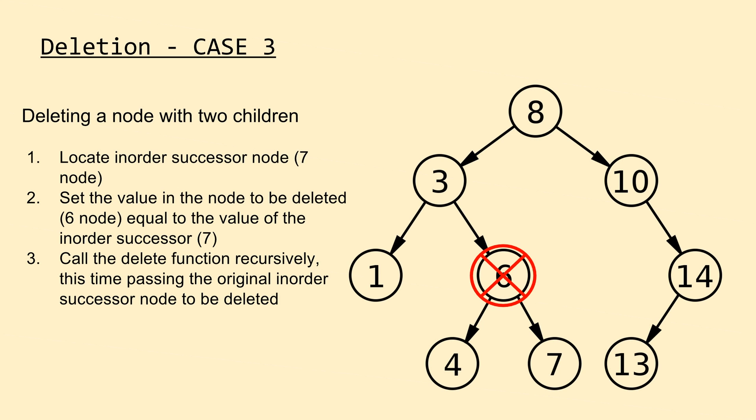The third and final case to cover is when we try to delete a node with two children. This is the most complex of the three, but thanks to recursion, we can handle it in a very straightforward fashion. When trying to delete the node containing six, we first traverse through the tree in order to find the inorder successor of the six node. If the elements of the tree were in an array in sorted order, this would be the element directly after six. Once we have the value of the successor node, we replace the value in the node we wish to delete with the value of the successor node, replacing integer six with integer seven in our example. Now that we have two copies of the value of the successor node, we call the deletion function again recursively, this time requesting to delete the original successor node. On the second call, we would enter into case number one, where we can simply delete the item because it's a leaf node.